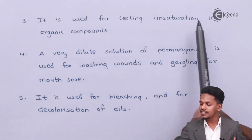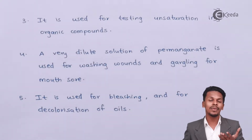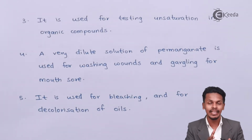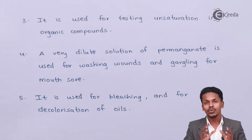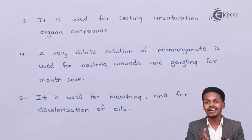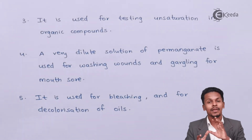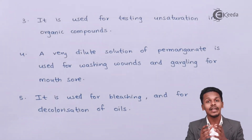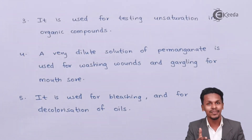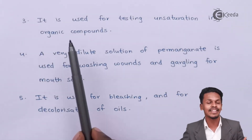The next point is that KMnO₄ is used for testing unsaturation in organic compounds. KMnO₄ acts as a very strong oxidizing agent, and when treated with an alkene it forms a glycol. Since KMnO₄ is purplish in color, after the reaction the unsaturated alkene is broken to form a saturated alcohol, and the purple color disappears. This indicates the presence of a double bond or multiple bond that has been converted into a single bond.